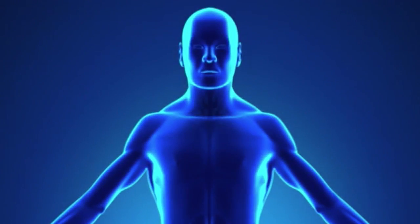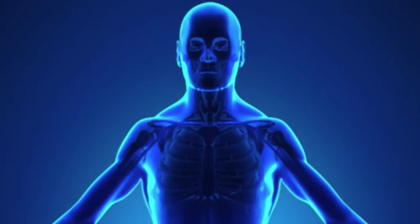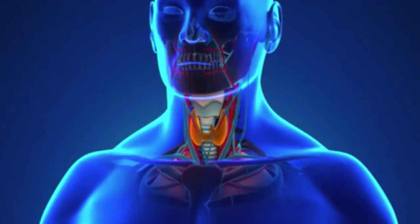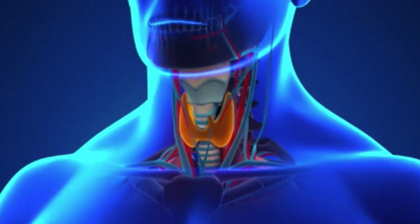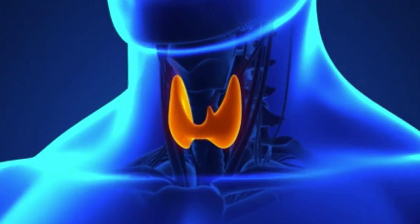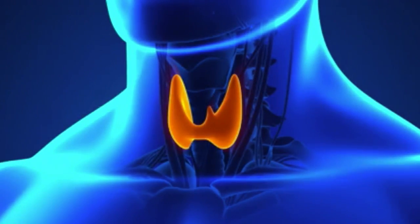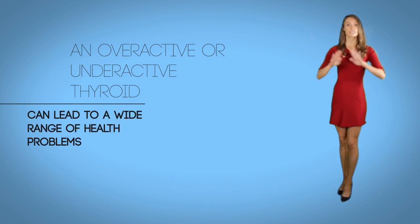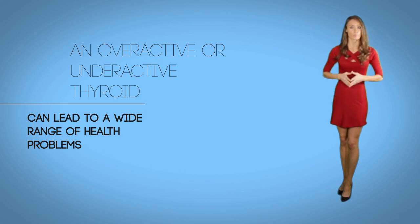Without any further ado, let's get started and go over thyroid disorders. The thyroid gland is located at the front of the neck. This gland secretes hormones that govern many functions in the body, such as the way the body uses energy, consumes oxygen, and produces heat. Thyroid disorders usually occur when this gland produces too much or too few hormones, and an overactive or underactive thyroid can lead to a wide range of health problems.